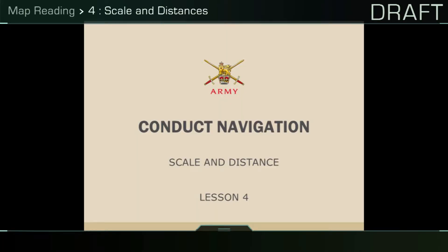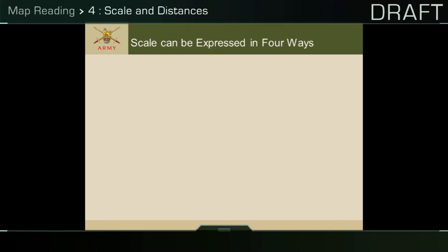Map Reading 4: Scale and Distance. It is essential that you are aware of the importance of map scale and are able to accurately measure distances on a map. The scale on a map is the relationship between the distance on a map and the distance on the ground. Map scale can be expressed in four different ways.